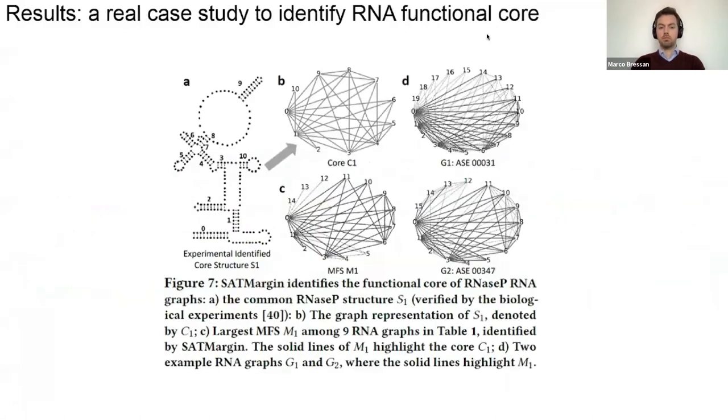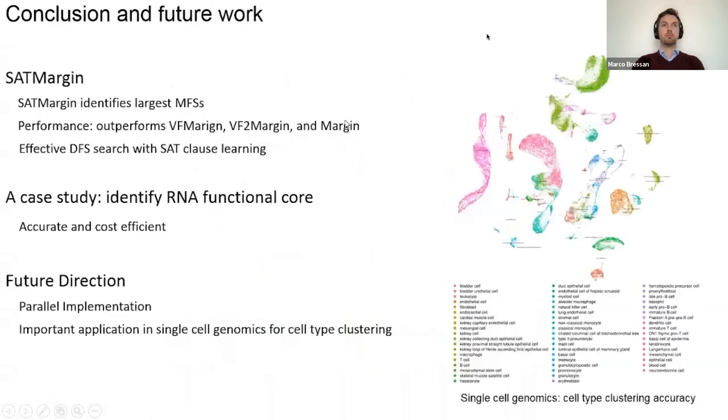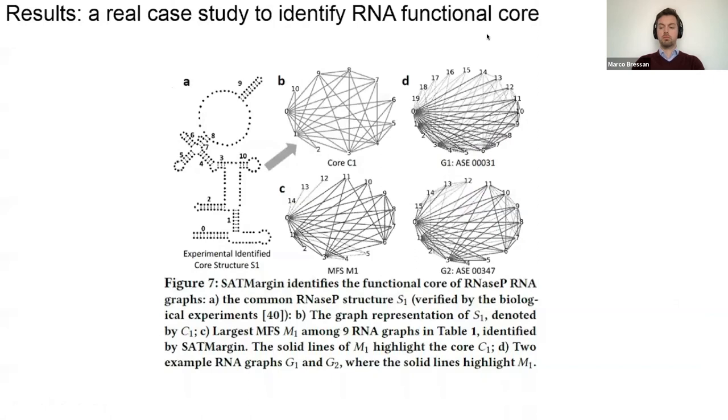The next one is a real case study. We collected nine RNA structures from RNA structure database and converted them into graphs. We applied SATMargin and identified two structure graphs where the solid lines are the shared subgraph called M1. Interestingly, we can recover this shared function substructure which can be represented as this subgraph C1, and the MFS M1 can recover this C1 subgraph, which indicates we can use our algorithm to infer the function core of RNA structures. That can prevent a lot of intensive wet lab experiments.